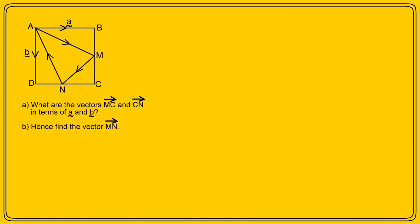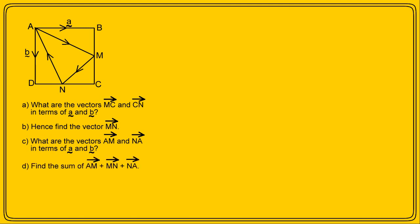Part B: hence find the vector MN. Part C: what are the vectors AM and NA in terms of a and b? And finally part D: find the sum of the vectors AM plus MN plus NA. Now remember to keep the idea of the high road and the low road in mind at all times.